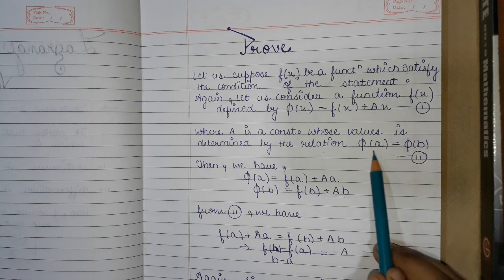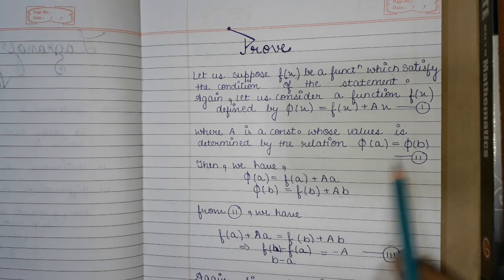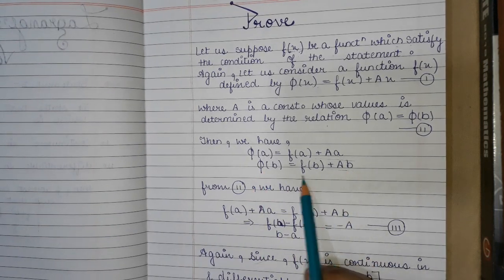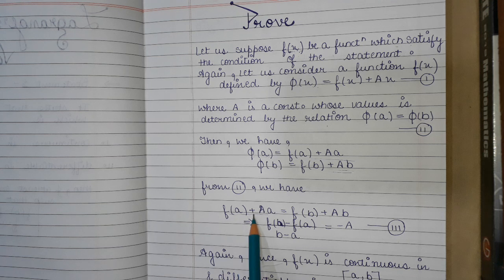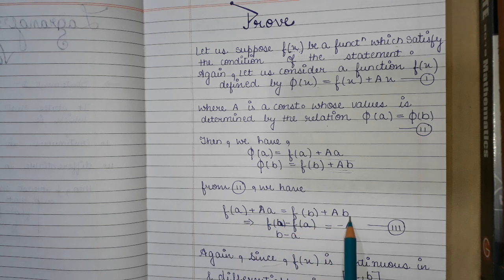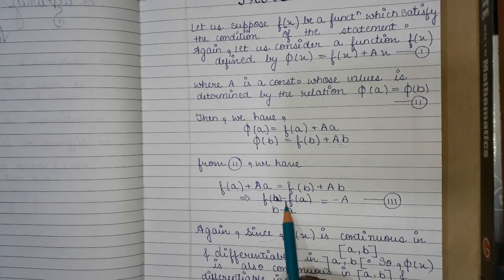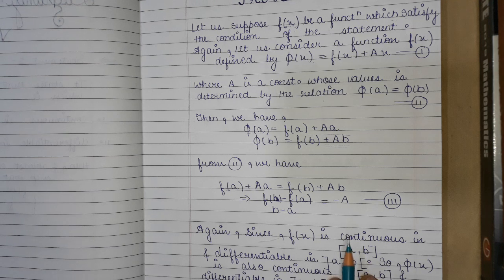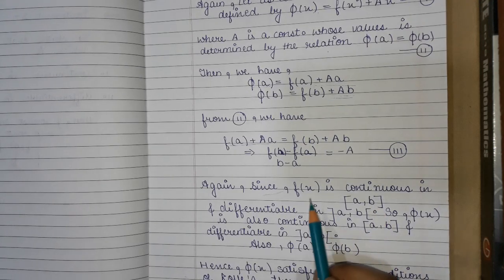Since we have taken φ(a) equal to φ(b), from condition 2 we can write: f(a) + A·a = f(b) + A·b. Solving this gives us f(b) minus f(a) by b minus a = minus A, which we represent as equation 3.